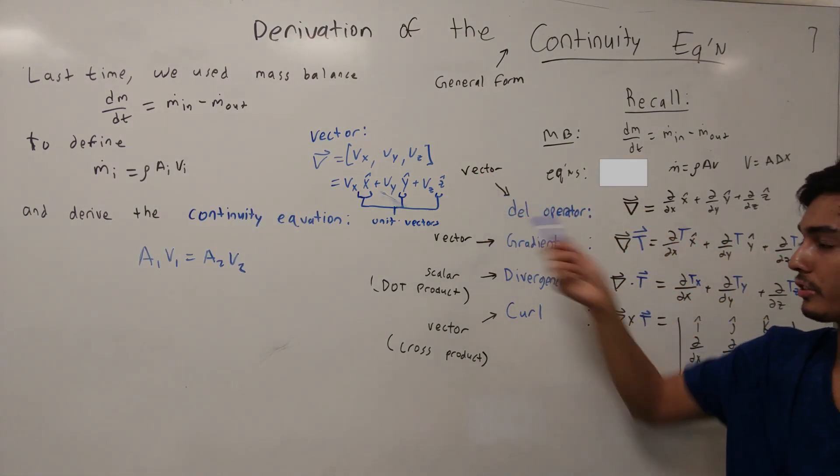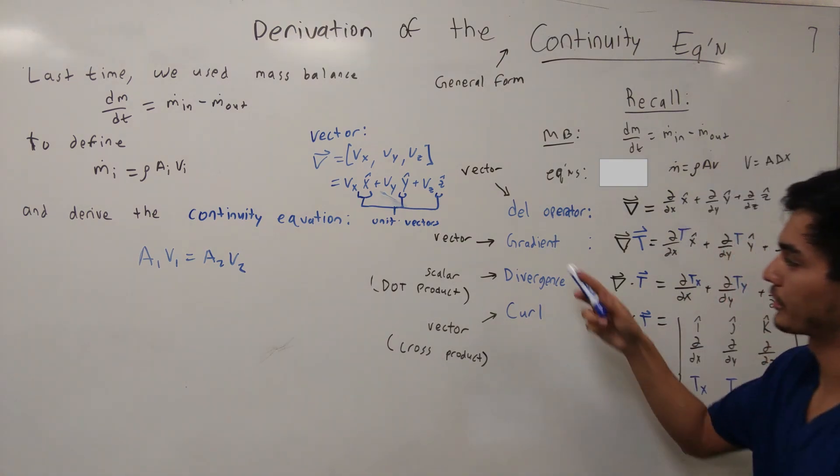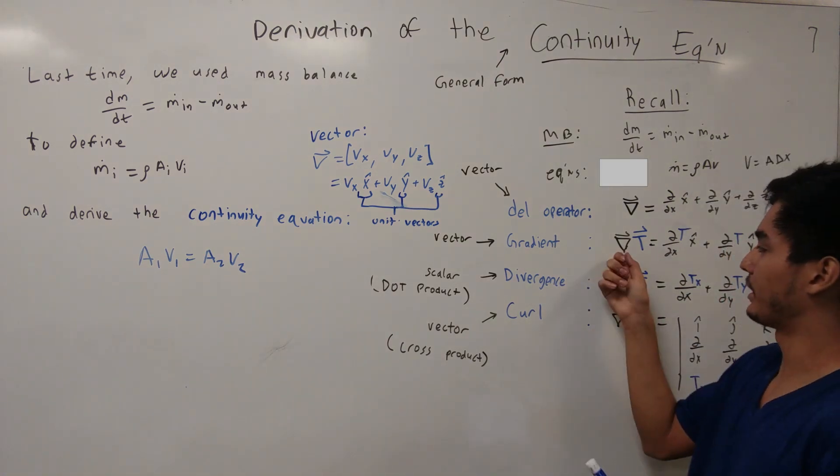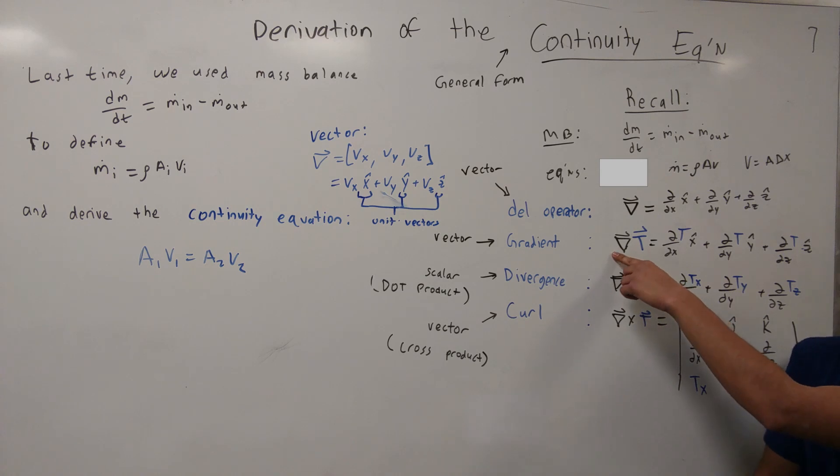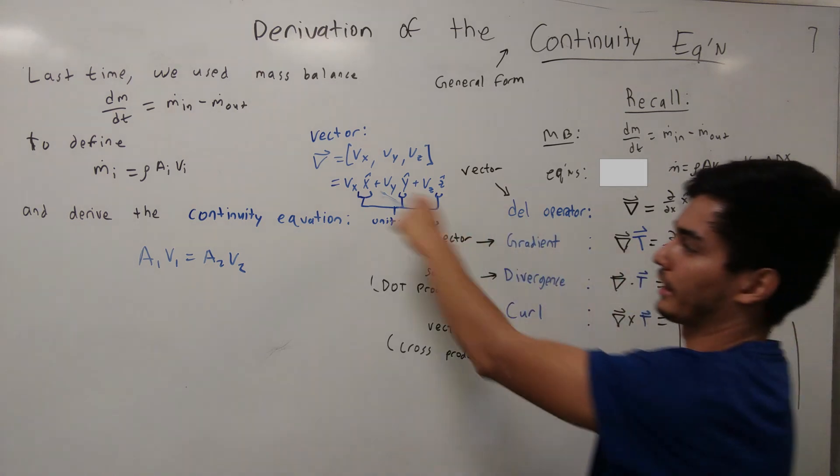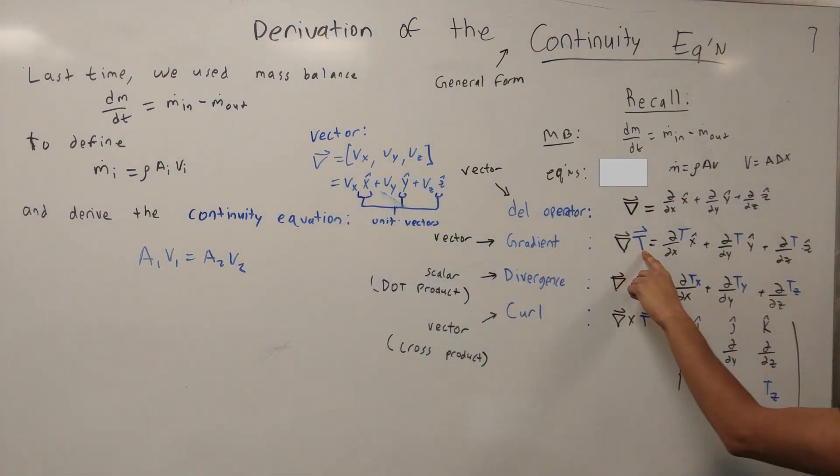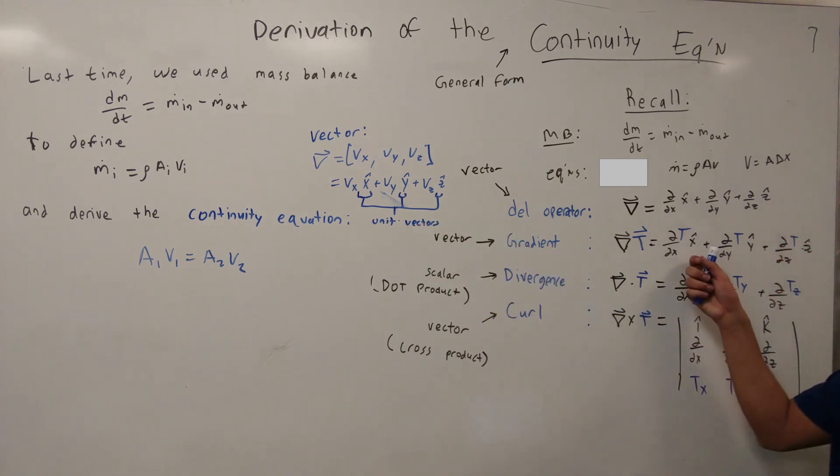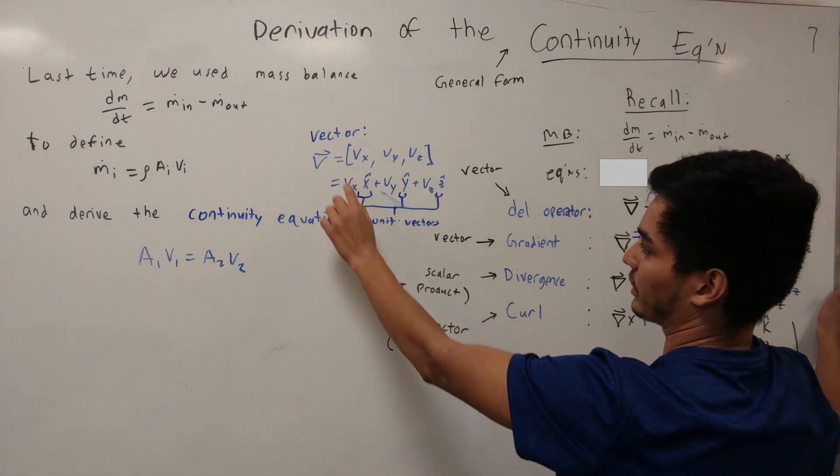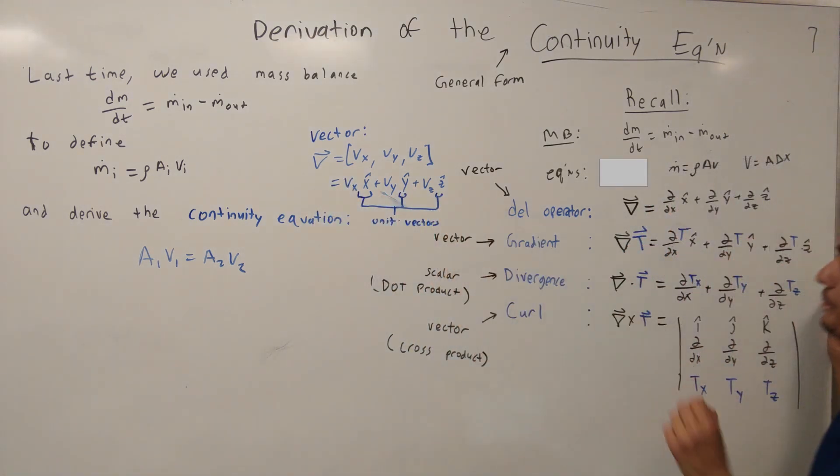And so, we can use the del operator to define other things. For example, the gradient. So, the gradient is, you're taking the vector, and you're operating it on another vector. You take the partial with respect to x in the x direction, add it with the partial with respect to y in the y direction, and the partial with respect to z in the z direction. And is this a vector or a scalar? This is also a vector because, again, it has the same notation as this. You're adding x hat, y hat, and z hat.